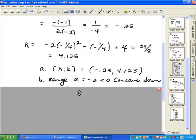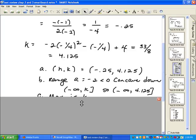Anything that's concave down has a range of negative infinity all the way through k. k is 4.125, so this would be negative infinity to 4.125.